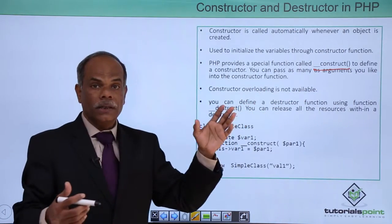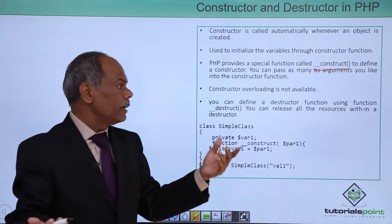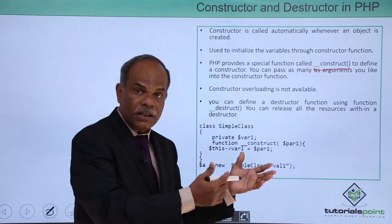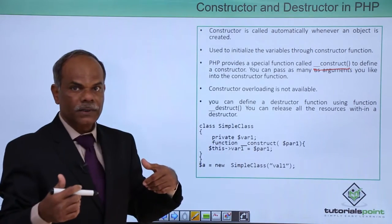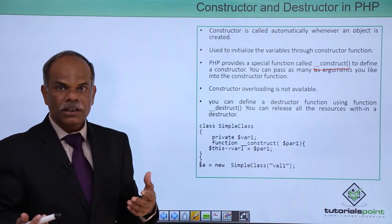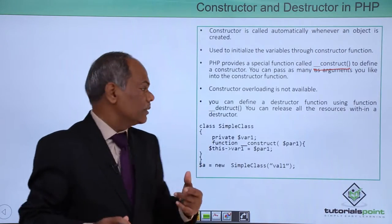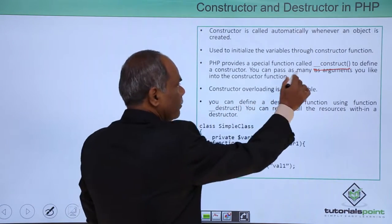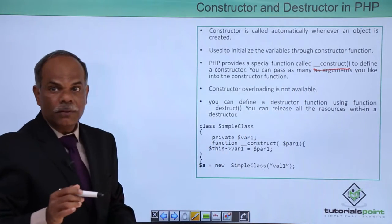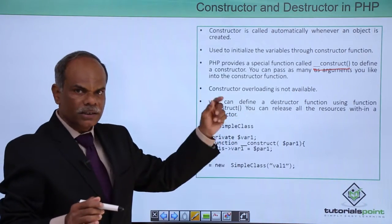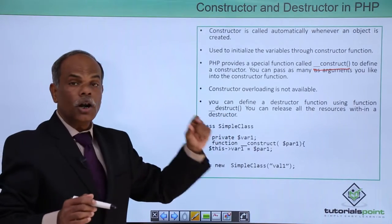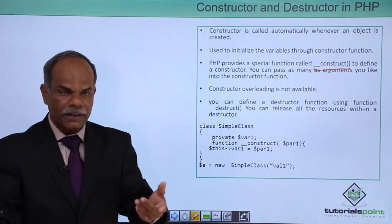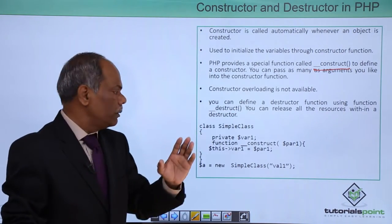Constructor overloading is not available in PHP language. If you have a constructor, you can also have a destructor. The role of the destructor is to release or destroy the object. You can define the destructor similarly — if double-underscore construct was the name of the constructor, then double-underscore destruct (__destruct) is the destructor. This special function is called whenever the object goes out of scope — whenever the object is no longer needed, this destructor function will be called.